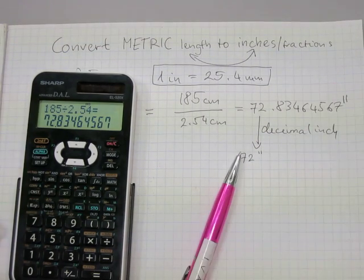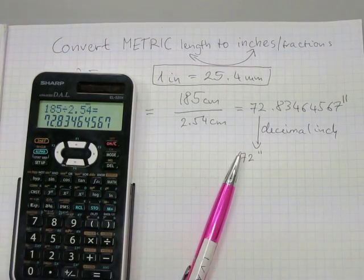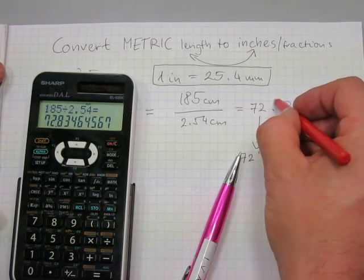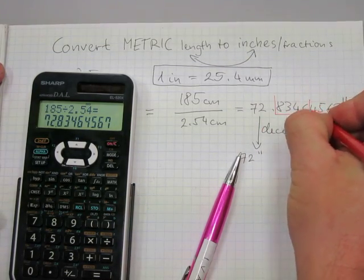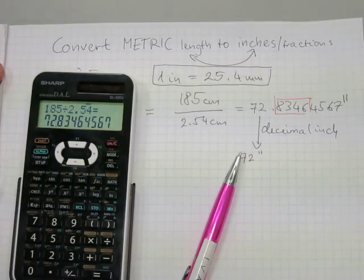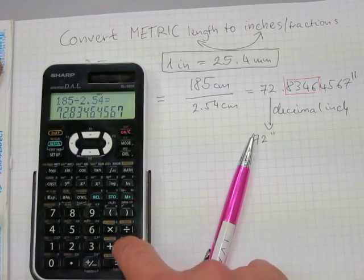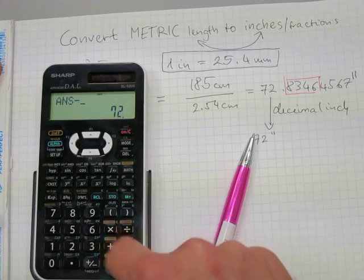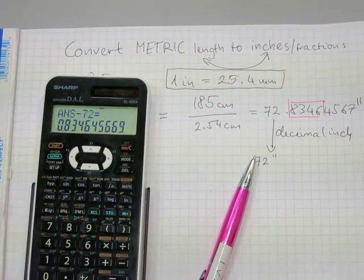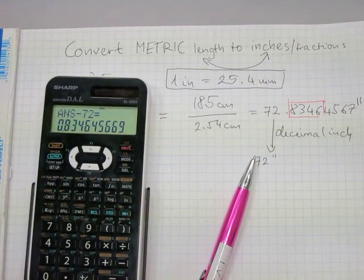Just for time and simplicity's sake, we just work with these first four digits. But we don't have to, we can just subtract 72 from the answer and we have all the digits that we had before, then add the whole number, the 72.